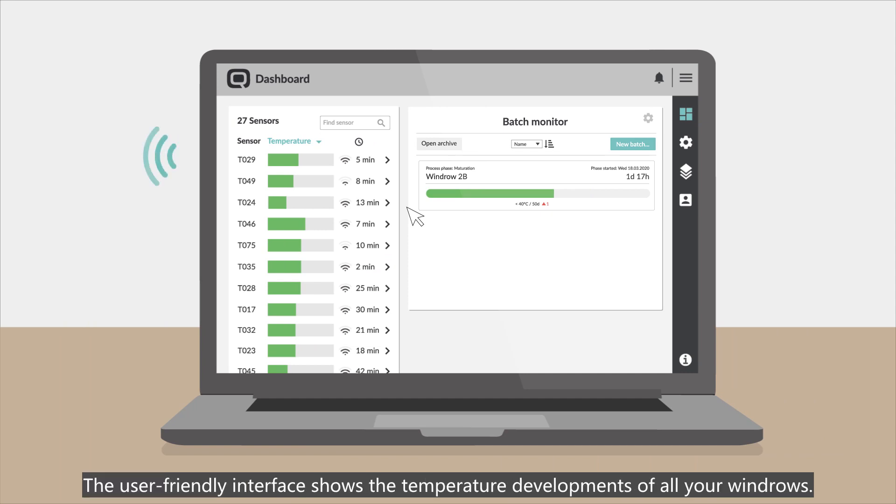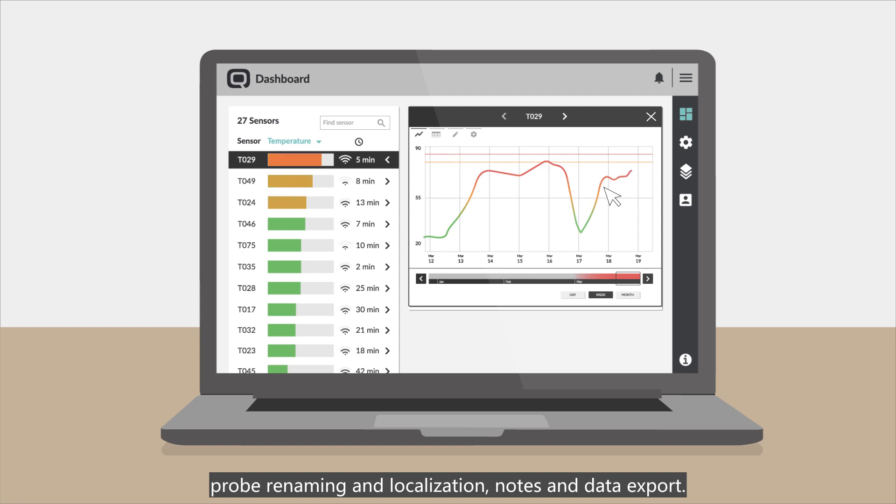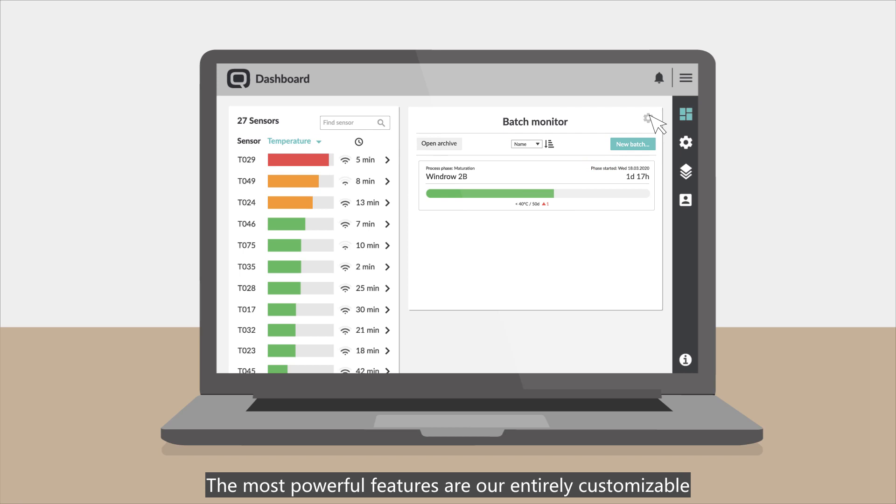The user-friendly interface shows the temperature developments of all your windrows. It also offers a range of functionalities including temperature alerts, probe renaming and localization, notes, and data exports. The most powerful features are our entirely customizable compost batch process monitoring and reporting.